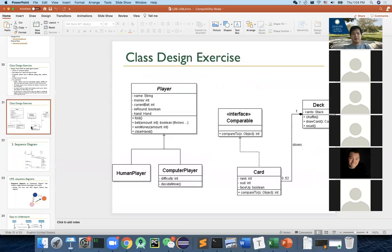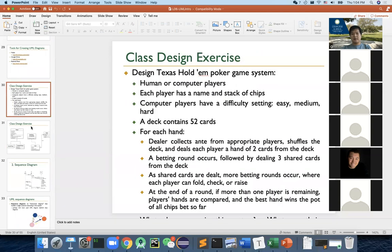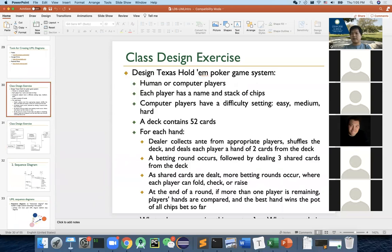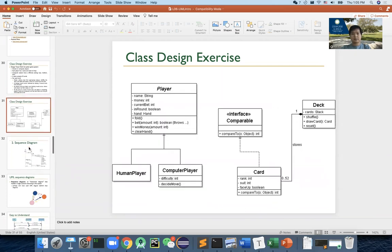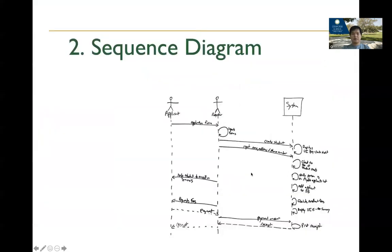Last time we talked about UML class diagrams. The main things you need to know are how to read and understand these diagrams, and how, given a description, you can write a structural high-level class diagram for a system — something you might see in an interview. Now I want to briefly talk about two more diagram types. This next one is the sequence diagram.